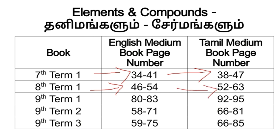Next, 9th standard Term 1 — the topic of Elements and Compounds. Check the full lesson on this topic. The new page number is 80 to 83 for English Medium, and page number 92 to 95 for Tamil Medium. Next, 9th Term 2 — Periodic Classification of Elements. English Medium book is page number 58 to 71. Tamil Medium book is page number 66 to 81.